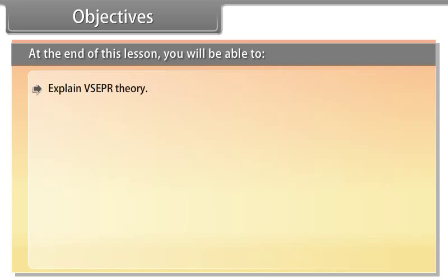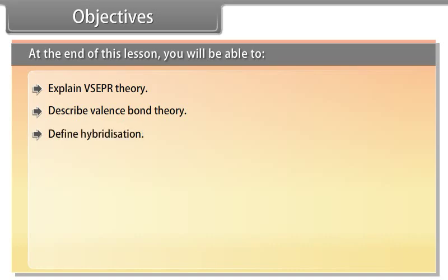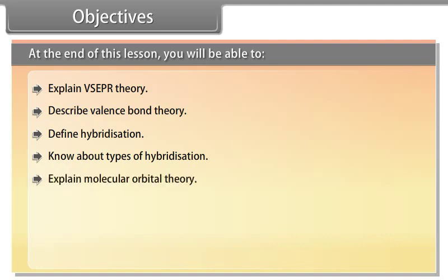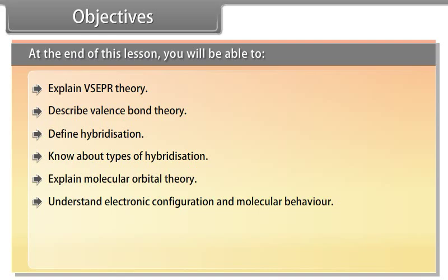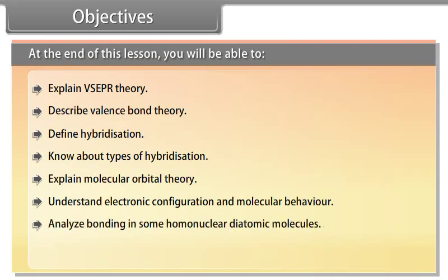Objectives. At the end of this lesson, you will be able to: explain VSEPR Theory, describe Valence Bond Theory, define Hybridization, know about types of hybridization, explain Molecular Orbital Theory, understand electronic configuration and molecular behavior, analyze bonding in some homonuclear diatomic molecules, and define Hydrogen Bonding.